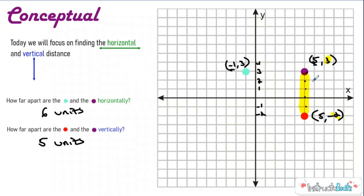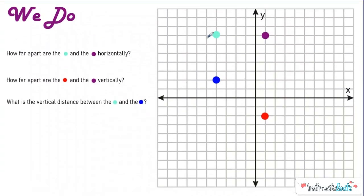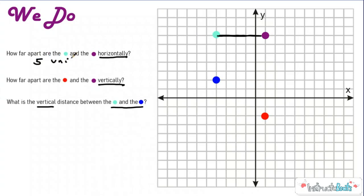So this is conceptually what we're talking about today. Let's take a look at what this might look like in a problem. Here we're given four ordered pairs and asked to find: the horizontal difference between the blue and purple, the red and purple vertically, and the light blue and blue horizontally and vertically. How far apart are the light blue and purple horizontally? You could just count how far apart they are — that'd be five units apart horizontally.